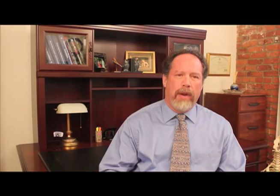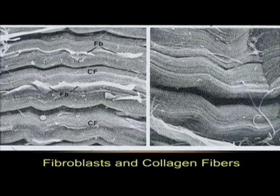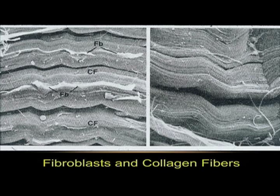Here is an electron microscopic picture of tendon. I wanted you to see the natural crimp related to the toe phase of the stress-strain curve. All tissues have an initial crimp that can be taken out without any strain being placed upon the tissue.